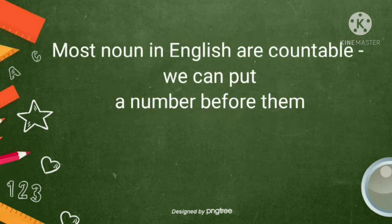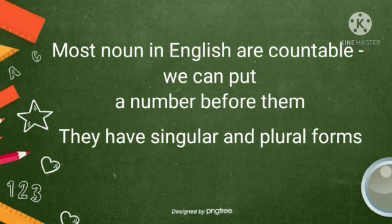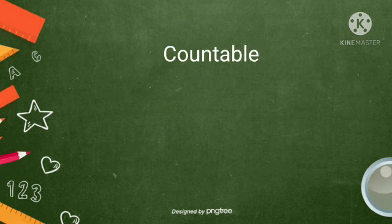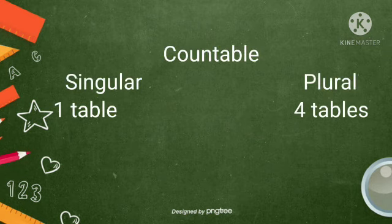Most nouns in English are countable. You can put a number before them. They have singular and plural forms. One table, four tables.